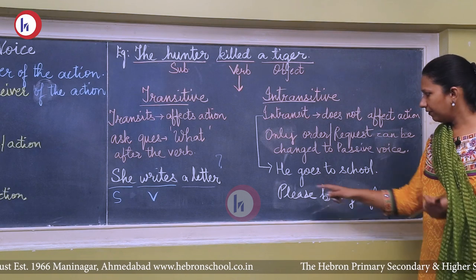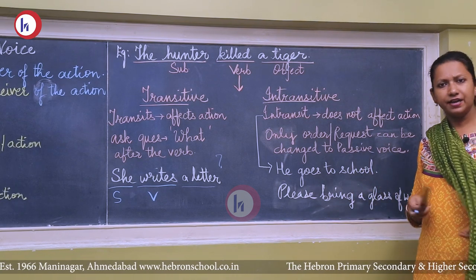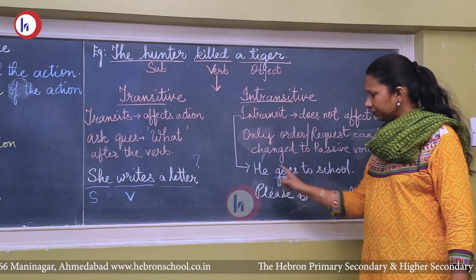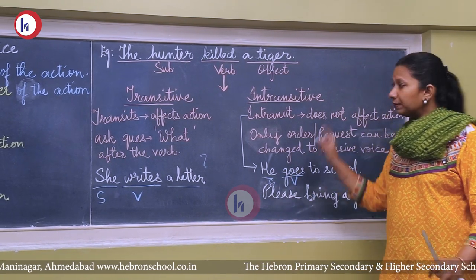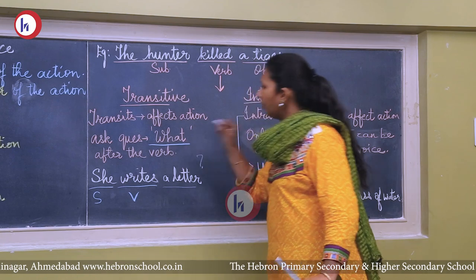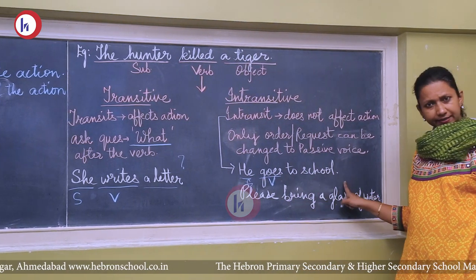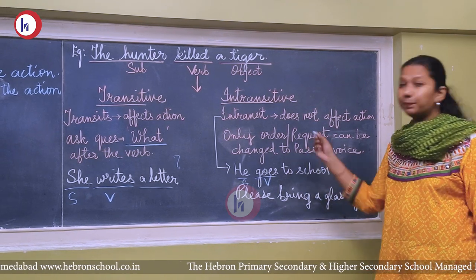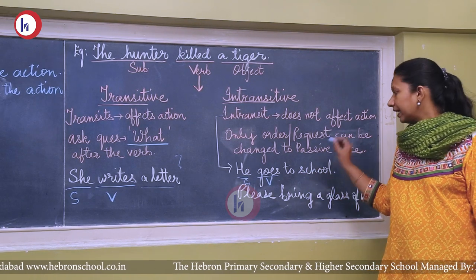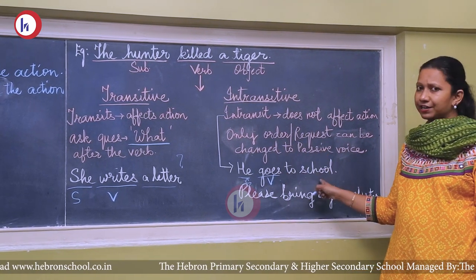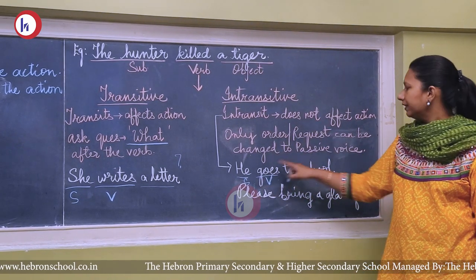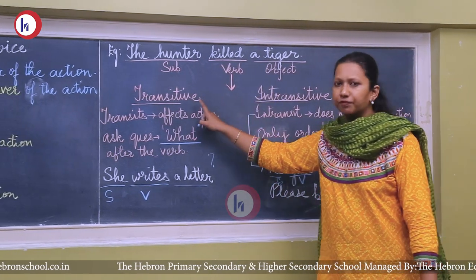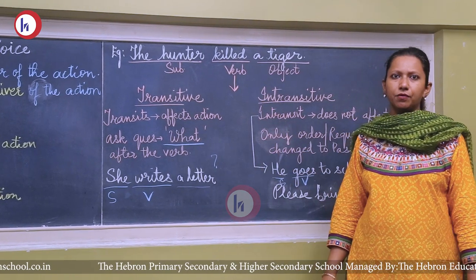'He goes to school' — ask 'he goes what?' — you don't get an answer. 'To school' shows place; it answers 'where', not 'what'. That means this verb does not affect the action on an object — it is intransitive. This sentence cannot be changed into passive voice. Only sentences with transitive verbs can be changed into passive voice.